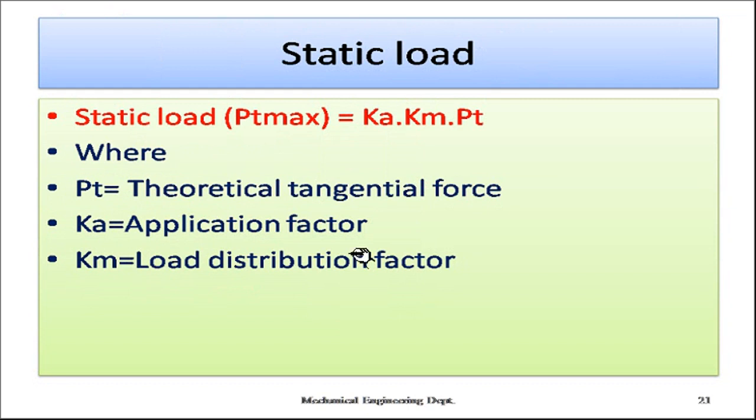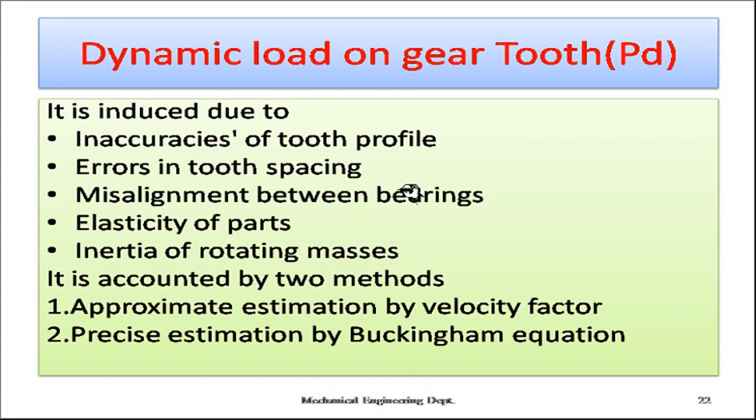The value of km can be obtained from a table and used for calculating the static force. We determine the application factor from the table, then apply the load distribution factor and the rated tangential force to calculate the static load acting on the particular gear tooth. So PT max equals PT times ks times km, where PT is the theoretical tangential force, ks is the application factor, and km is the load distribution factor.